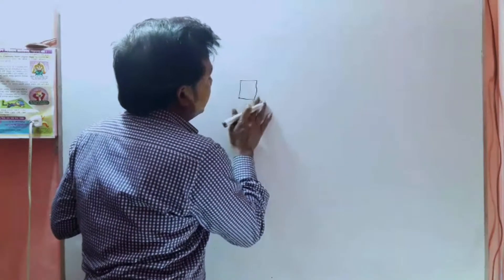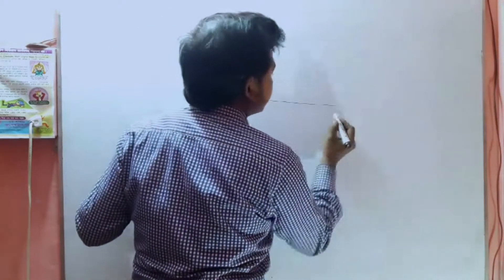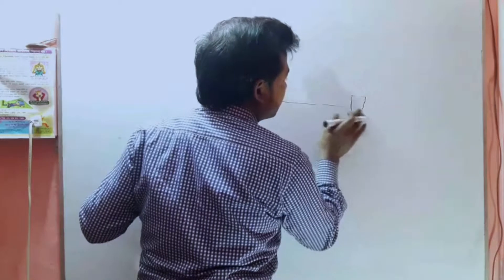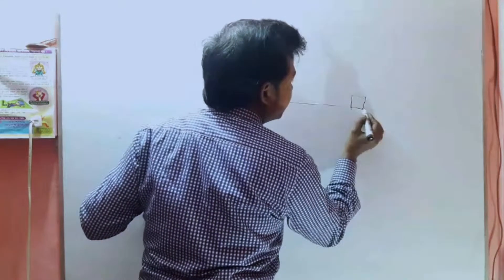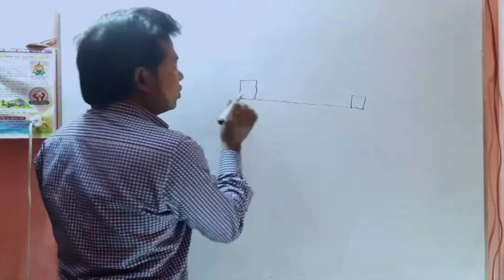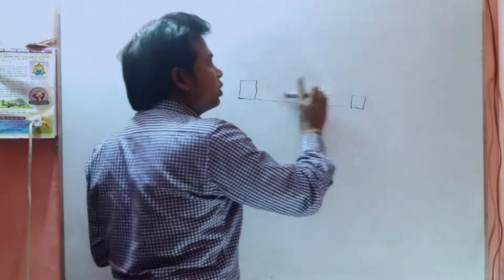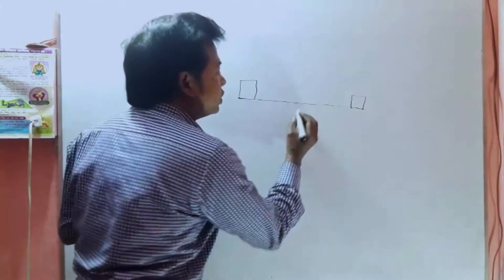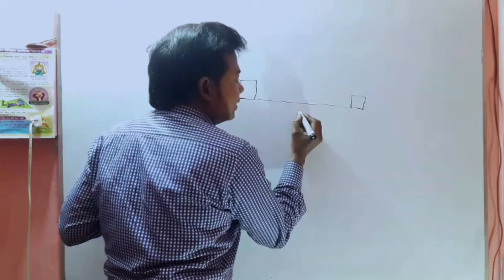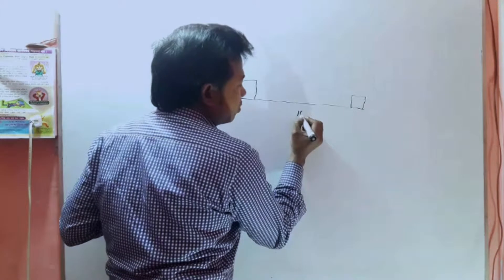Here are blocks. We can go down here and we will move this block. This block will be shown here and this block will be shown here. When you start the block, you will get 10N.